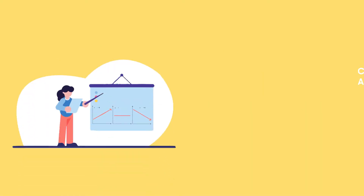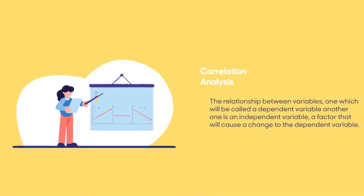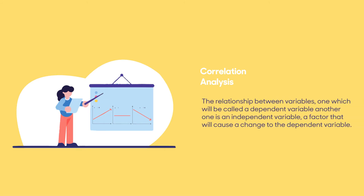Correlation analysis. It can be performed by looking at the relationship between variables — one which will be called a dependent variable, another one is an independent variable, a factor that will cause a change to the dependent variable.